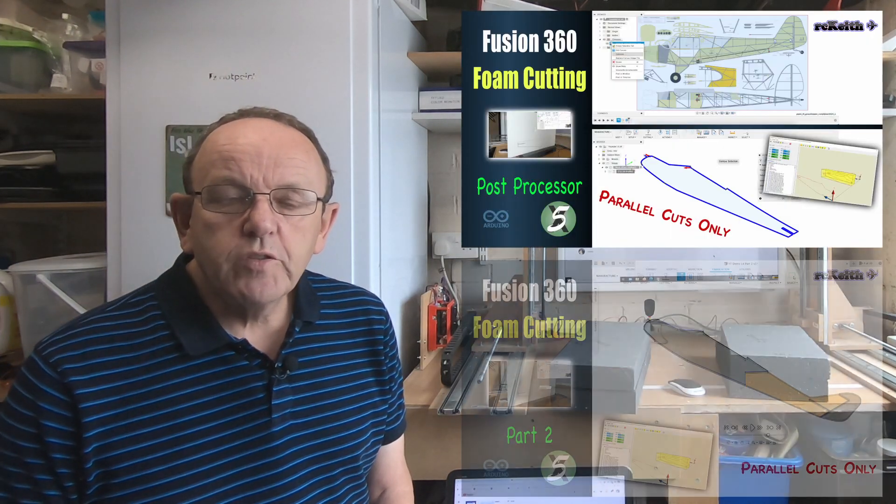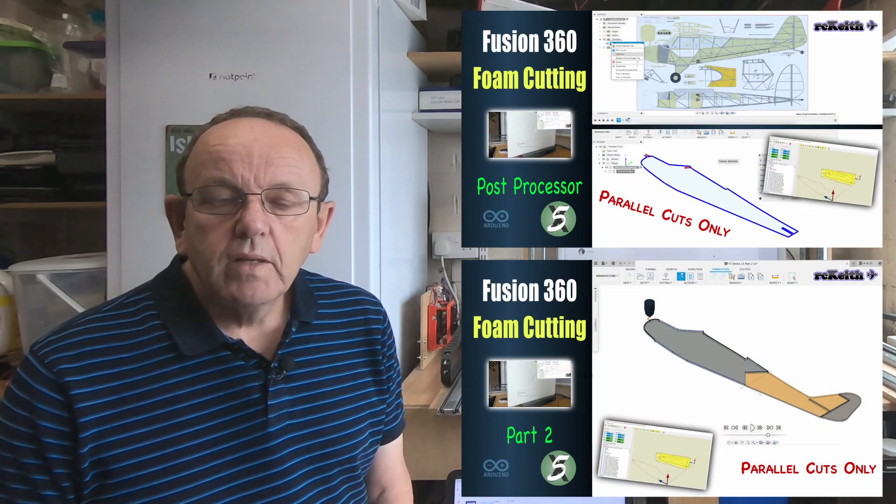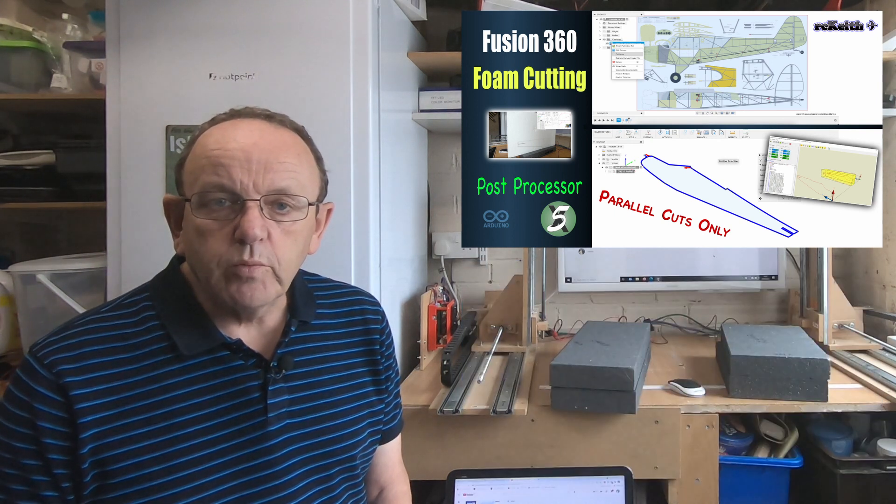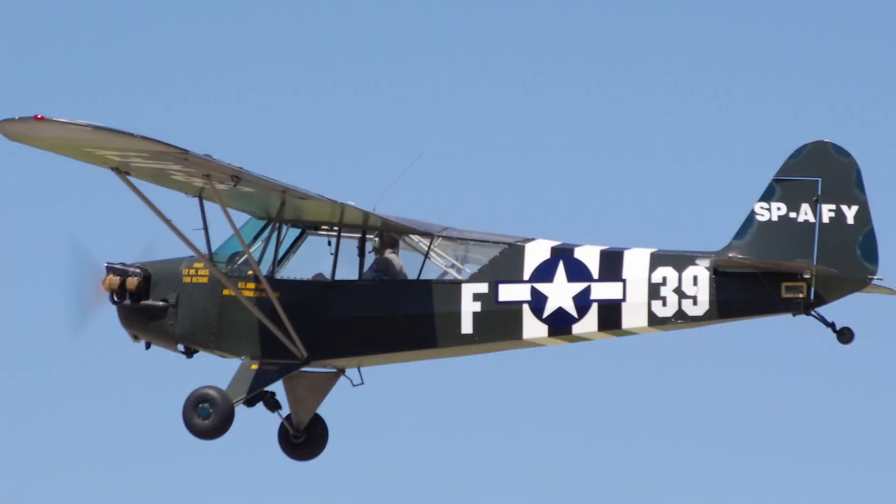Hi guys, welcome to the video. This is part three of the Fusion 360 foam cutting series, so I highly encourage you to watch parts one and two where we did the design. We're doing a very simple design for a fuselage for an L4 Grasshopper. In part two we saw how we got the design out in two parts because it was a bit bigger than the foam cutter to cope with.